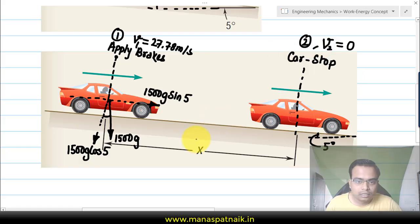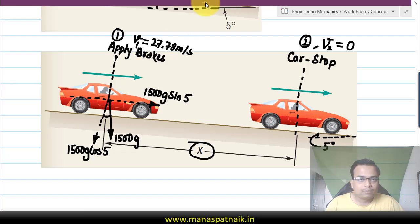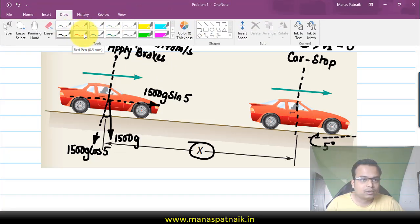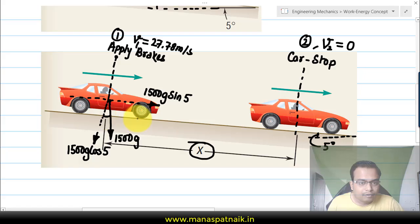This is position two, and here eventually as the car stops, the velocity that the car will have in position two will obviously be equal to zero. In that process the car has traveled a distance of x meters. When you applied the brakes, there was a braking force acting somewhere along the tires, and that braking force has been given as 8000 newtons.